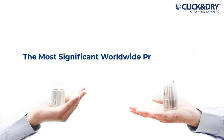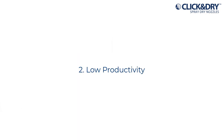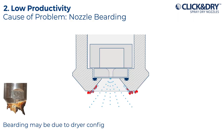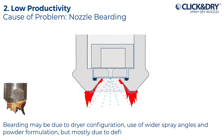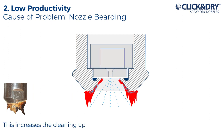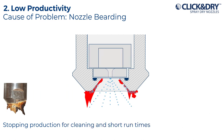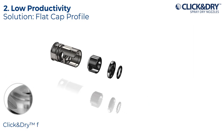The most significant worldwide problems when spray-drying powders and the solutions. Low productivity — cause of problem: nozzle beading. Beading may be due to dry configuration, use of wider sprinkles and powder formulation, but mostly due to deficient nozzle design. This increases the cleaning frequency, which delays production. Stopping production for cleaning and short run times play a big part in dryers' low productivity.